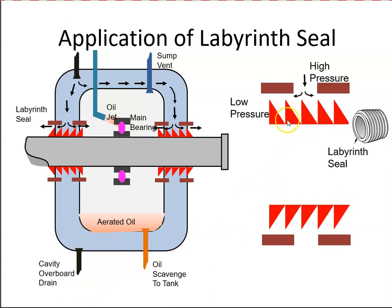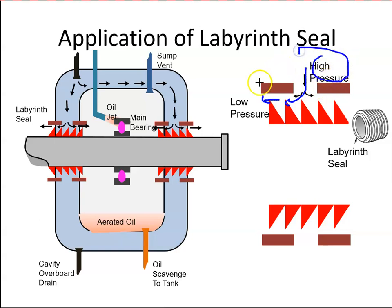Here are the fins replicated and here is the bleed air. When the air comes through and passes these fins, we get a pressure drop — high pressure on one side and low pressure on the other. That means we have a low pressure area inside the compartment and a high pressure area outside.